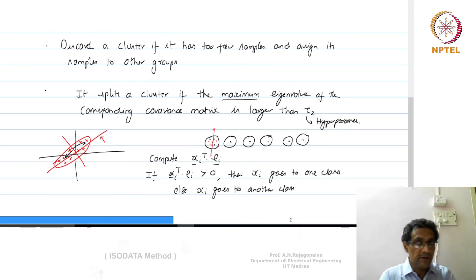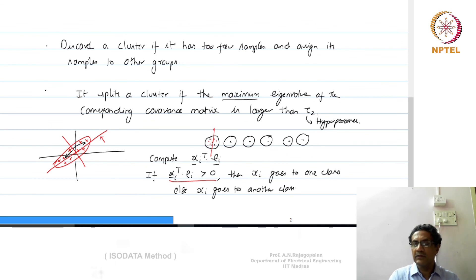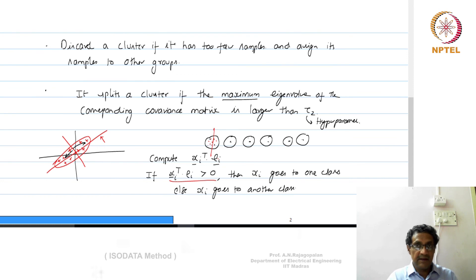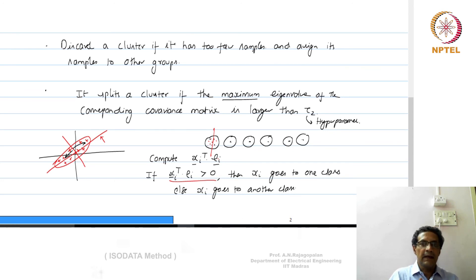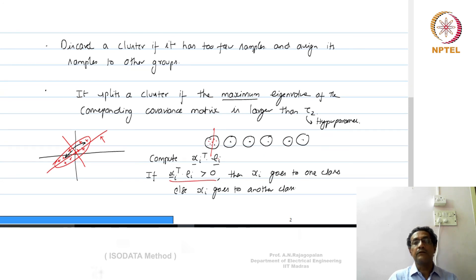You continue this process — similar to K-means — until labels are unchanged, then rerun with different initializations and pick the assignment with minimum error. This requires more computation, but ISODATA gives you the flexibility to change K along the way. You start with a reasonable estimate of K, and as iterations progress K can decrease or increase. ISODATA is an extension of K-means that addresses the issue of not having exact knowledge of K.